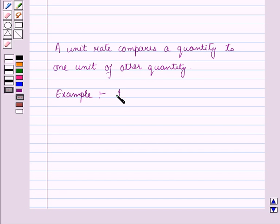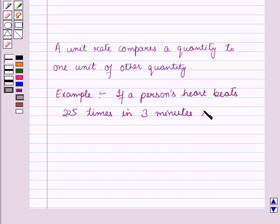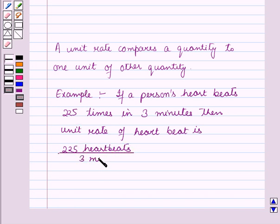For example, if a person's heart beats 225 times in 3 minutes, then the unit rate of heartbeat is 225 heartbeats upon 3 minutes.